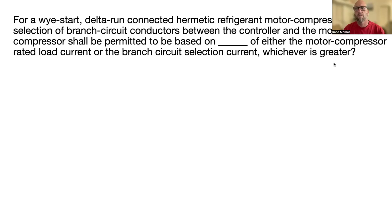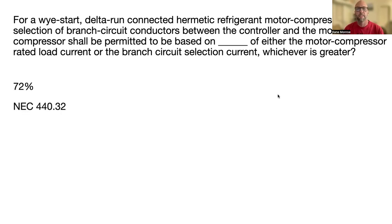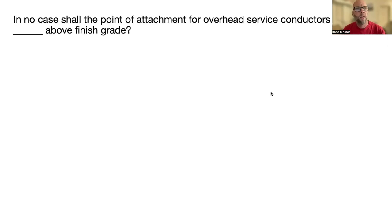For a wye or delta connected refrigerant motor compressor, the selection of branch circuit conductors between the controller and the motor compressor shall be permitted to be based on 72 percent of either the motor compressor rated load current or the branch circuit selection current, whichever is greater. That's NEC 440.32, right in the next article after 430, which covers motors.